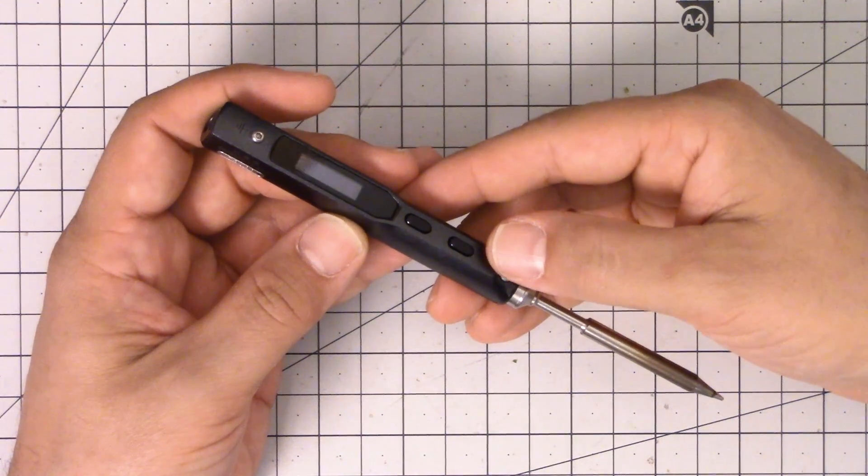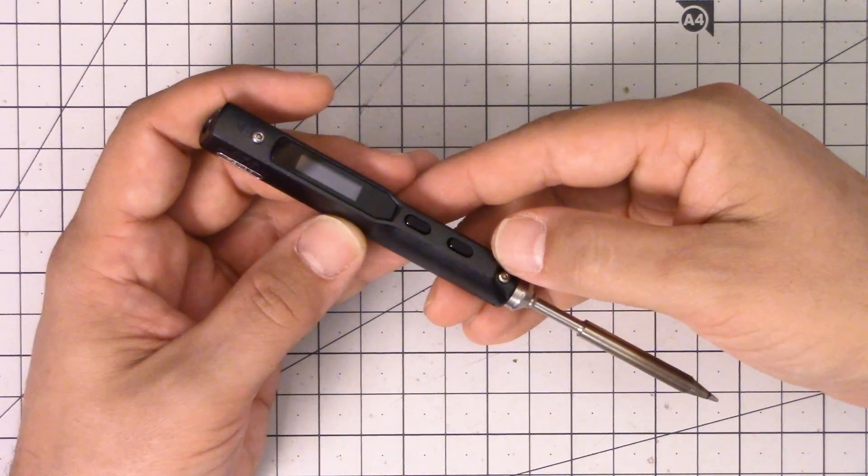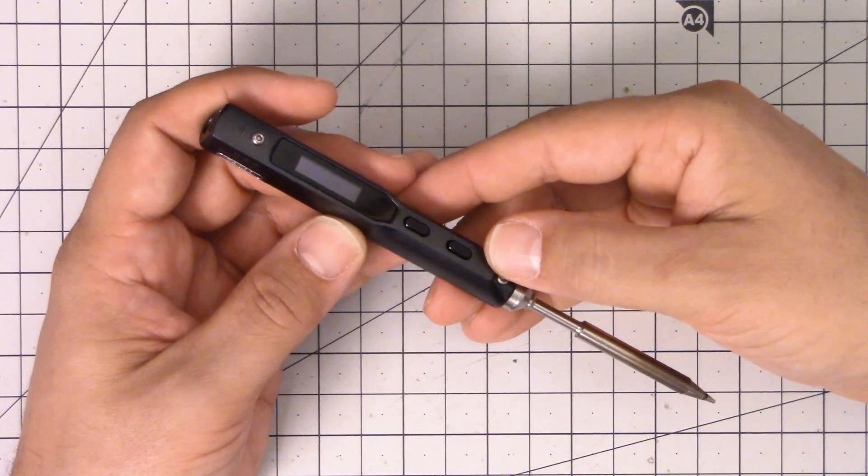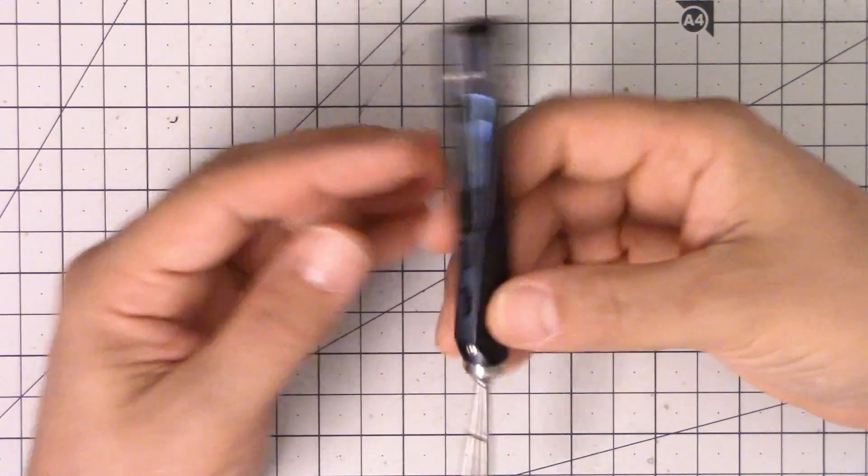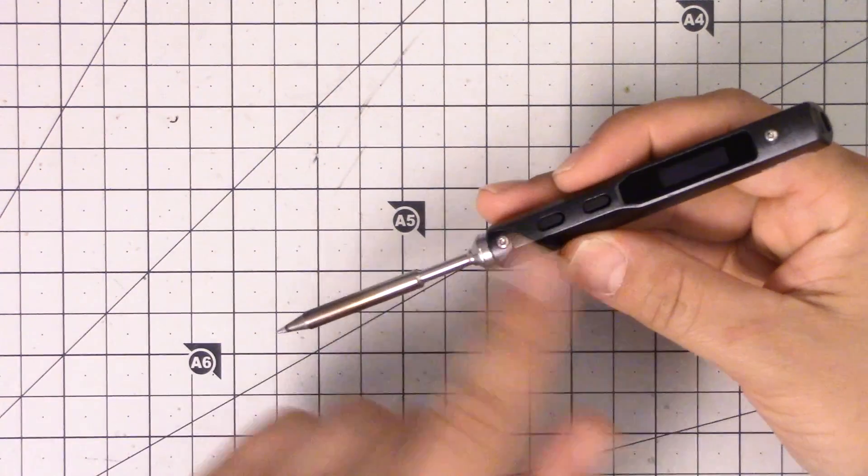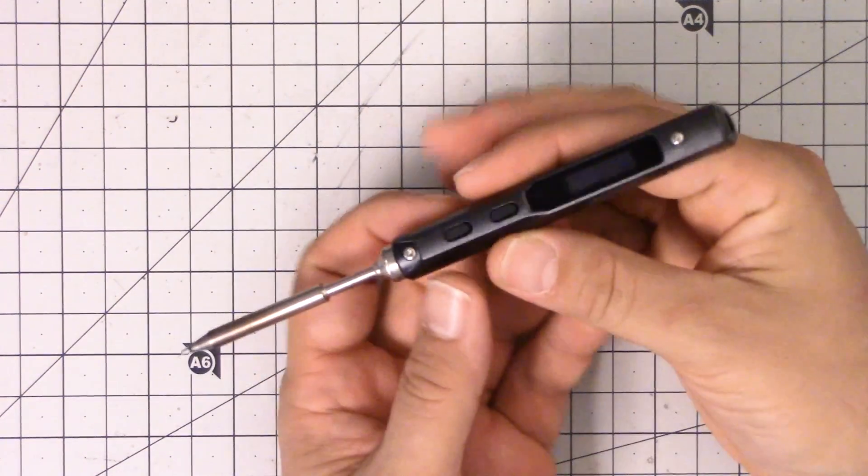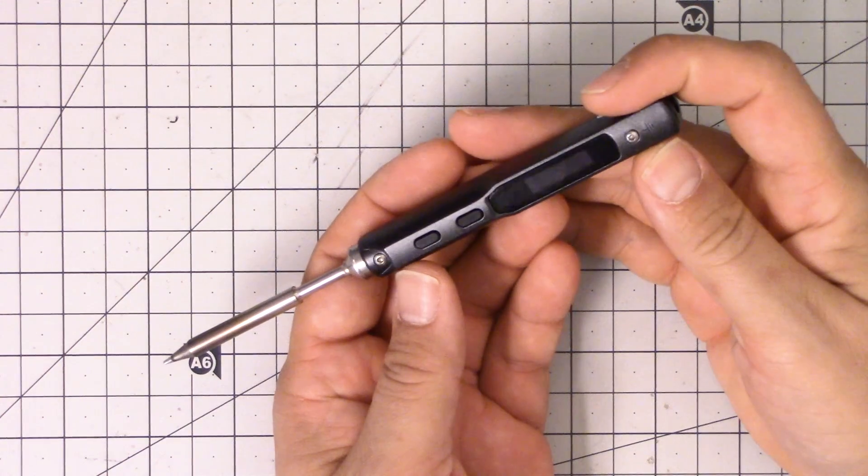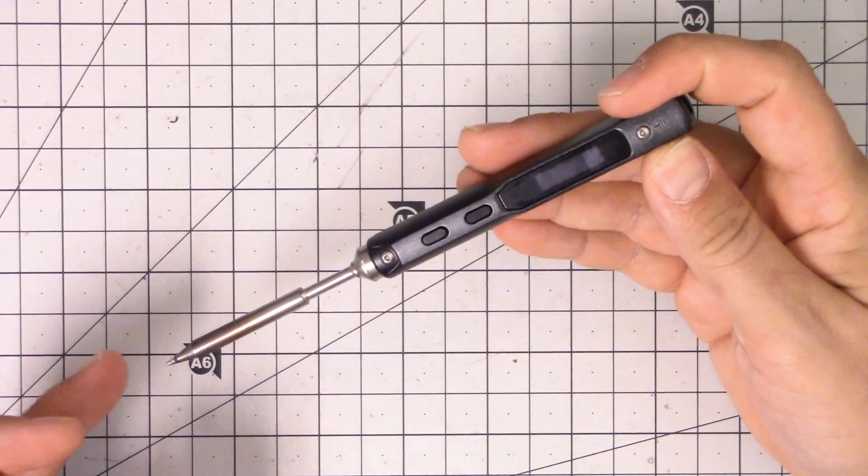The downside though is that I am not aware of any butane soldering irons that have temperature control. What temperature control means is that in the tip of the soldering iron there is a temperature sensor, and the soldering iron monitors the temperature of the tip.